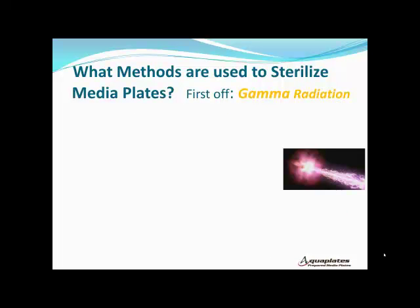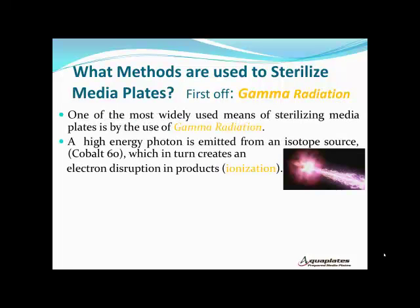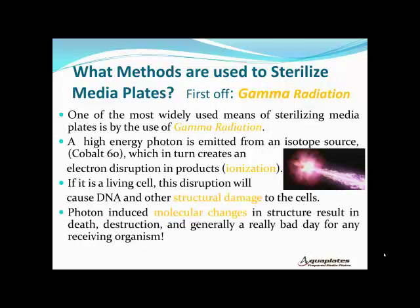What methods are used to sterilize media plates? Let's start off with gamma radiation. One of the most widely used means of sterilizing media plates is the use of gamma radiation. A high energy photon is emitted from an isotope source, usually cobalt-60, which in turn creates an electron disruption in products. This process is called ionization. If it's a living cell, this destruction will cause DNA and other structural damage to the cells. Photon-induced molecular changes in structure result in death, destruction — generally a really bad day for any receiving organism.